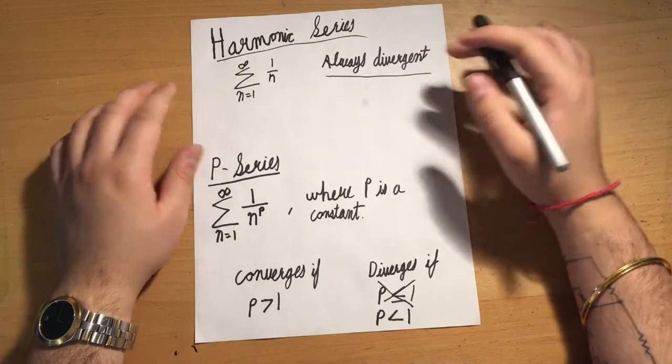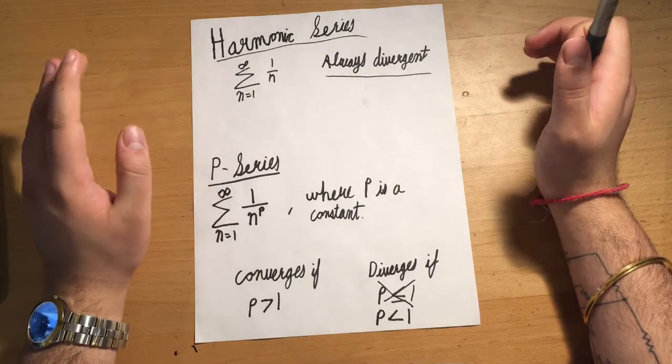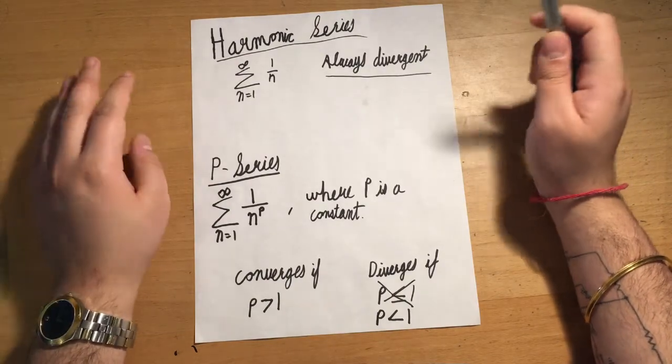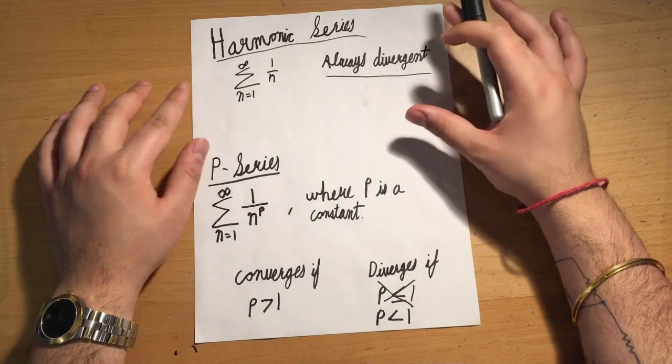Instinctually, you might think it converges just based on its form. There's a proof—I'm not going to do it in this video—but there is a pretty elegant proof for why a harmonic series is always divergent. For now, that's just something to memorize.